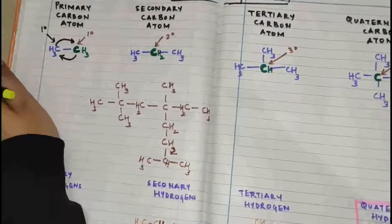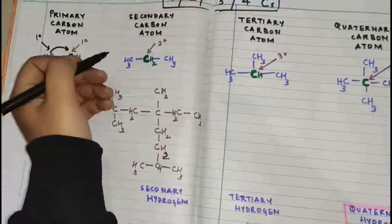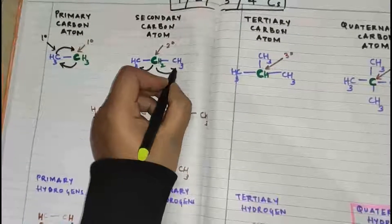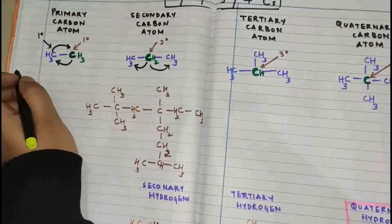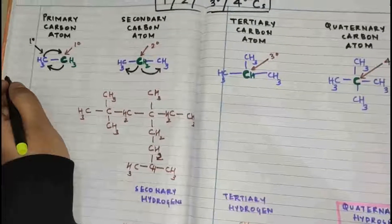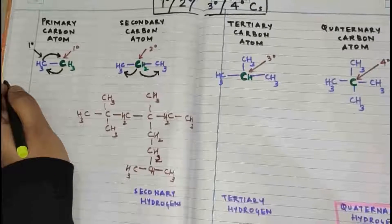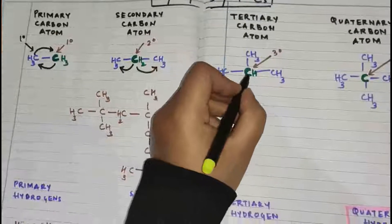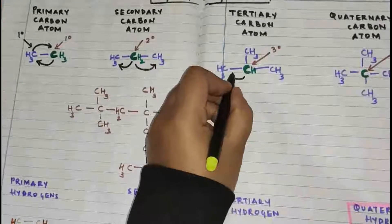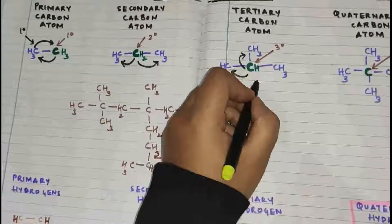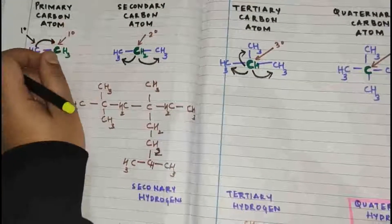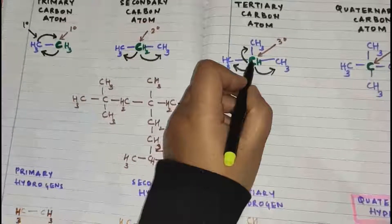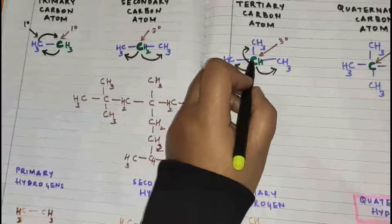Secondary carbon atom: the carbon atom which is attached to two more carbon atoms is called a secondary carbon atom. Tertiary carbon atom: the carbon atom which is attached to three more carbon atoms is called a tertiary carbon atom. If you look at this carbon, it is attached to one, two, and three carbon atoms.